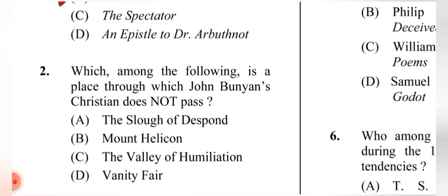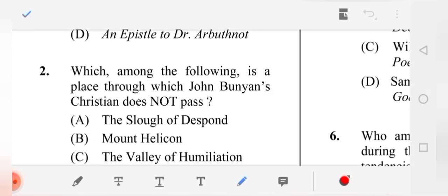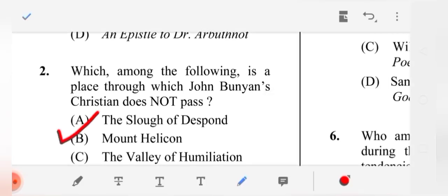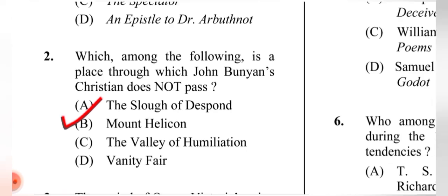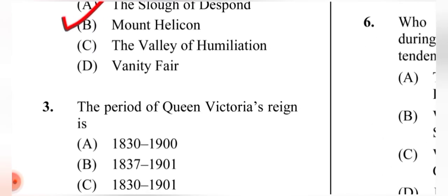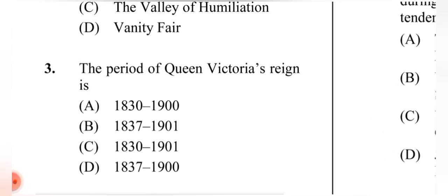Question 2: Which among the following is a place through which John Bunyan's Christian does NOT pass? The correct answer is Mount Helicon. Question 3: The period of Queen Victoria's reign — the correct answer is (B) 1837 to 1901.